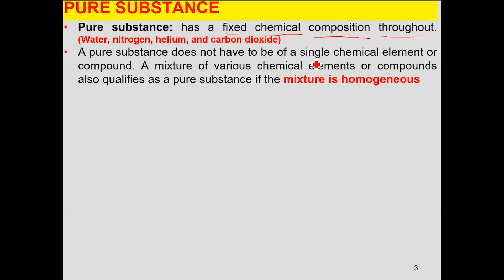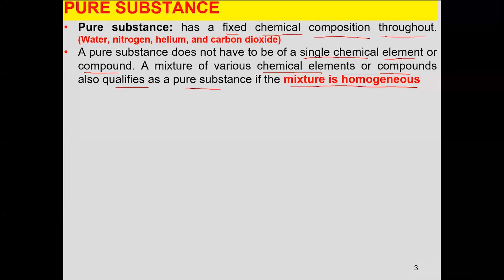A pure substance does not have to be a single chemical element or a compound. A mixture of various chemical elements or compounds also qualifies as a pure substance, as long as the mixture has the same chemical composition throughout. For example, water has a chemical composition of H₂ to O in a two-to-one ratio.